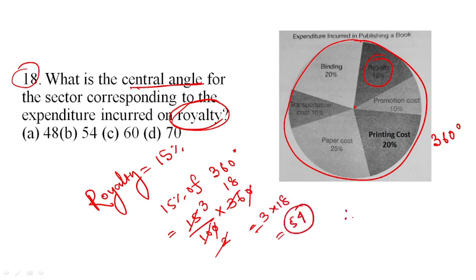This is 54 degrees, so the option A is the right answer. If you look at this, you can see how much of the royalty is.